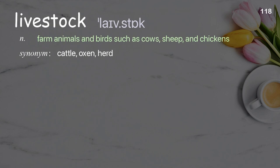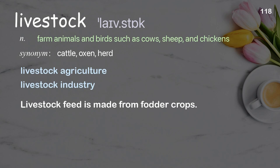Livestock. Farm animals and birds such as cows, sheep, and chickens. Examples: livestock agriculture, livestock industry. Livestock feed is made from fodder crops.